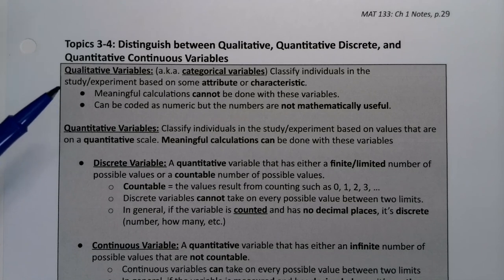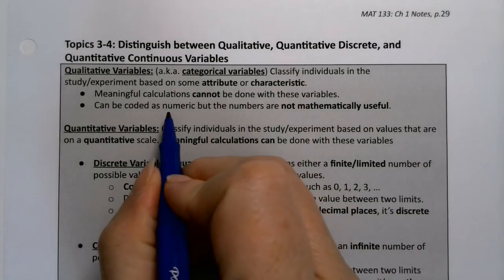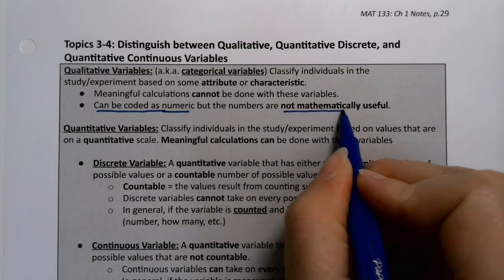Qualitative variables are variables that are some attribute or characteristic. You cannot perform meaningful calculations on these. You can't add them up and divide by five and get anything useful. Now, they can be numeric, but the numbers themselves would not be mathematically useful. That's qualitative variables. So just notice they can be numbers, but they have to be numbers that are not mathematically useful.